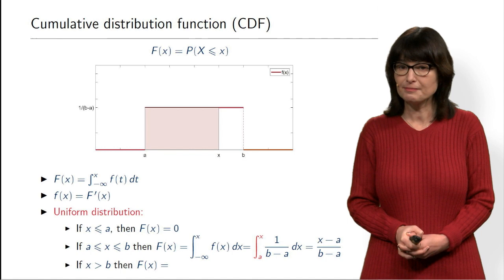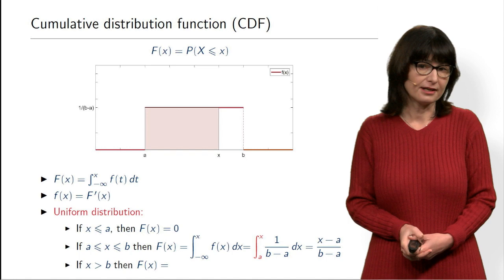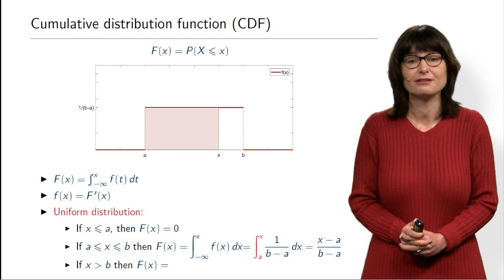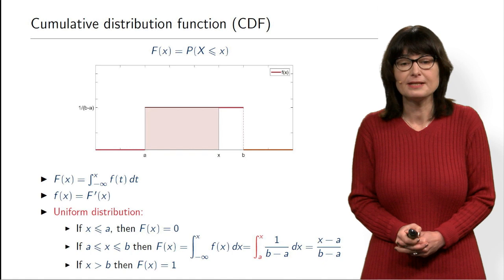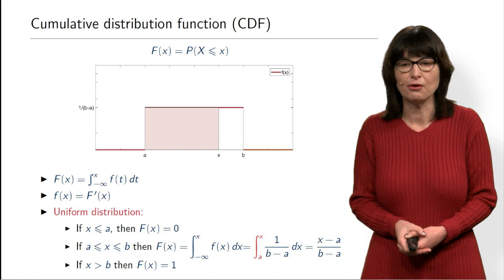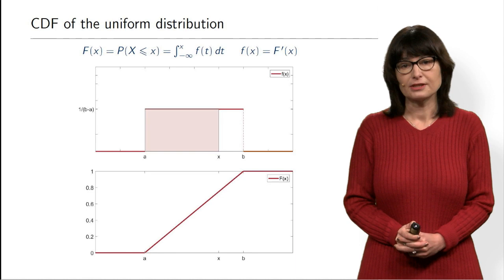For x > B: we integrate from minus infinity to x, which covers the entire rectangle plus zero density beyond B. The integral over the whole rectangle equals 1, so the CDF is 1 for all x > B. This makes sense: the probability that X ≤ x when x is larger than B is 1, because all values of X will be smaller than x.